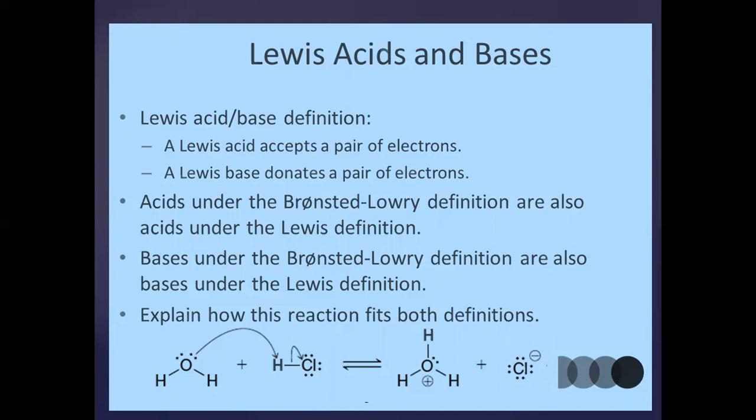What is Lewis acid and Lewis base? According to Lewis, an acid is a substance that can accept a pair of electrons to form a coordinate covalent bond. Lewis acid is a substance that accepts a pair of electrons in covalent bond formation.